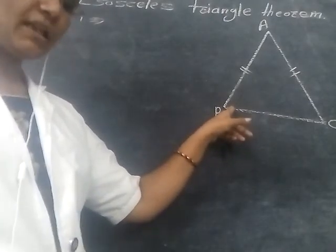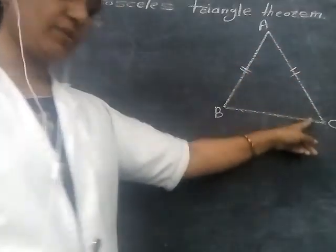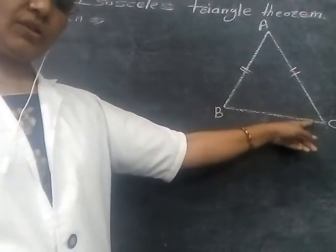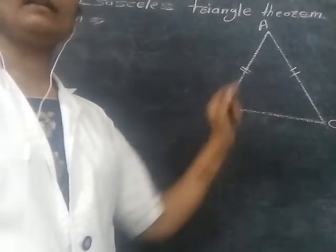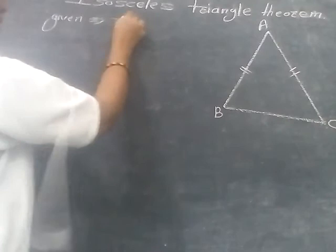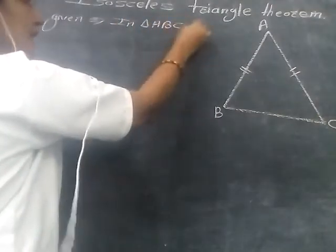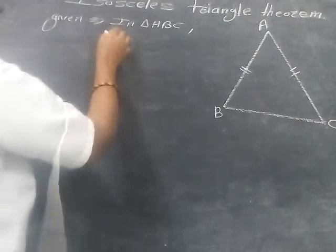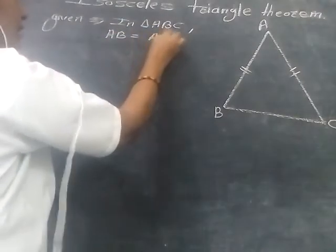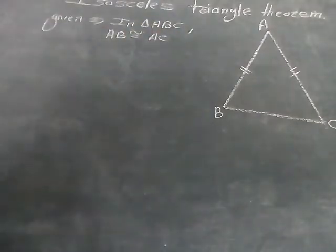Because the statement of the theorem is that if two sides of a triangle are congruent, then the angles opposite to them are congruent. So the given is: in triangle ABC, it is an isosceles triangle. We write here: AB is equal to AC, or AB is congruent to AC. This is our given.